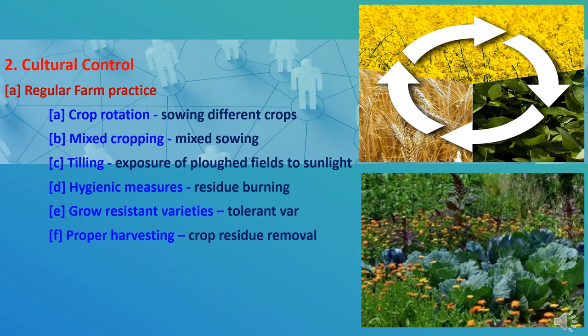Fifth is growing resistant varieties — we must grow plant varieties that can tolerate insect attack, or which insects do not prefer. Sixth is proper harvesting — the crop must be harvested properly, removing all leaves, stumps, and other plant parts from the field.